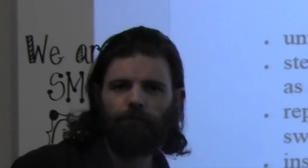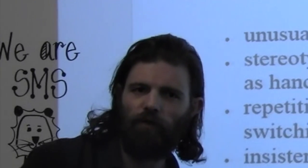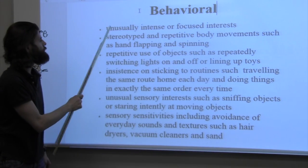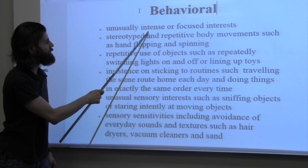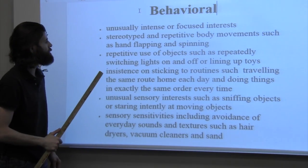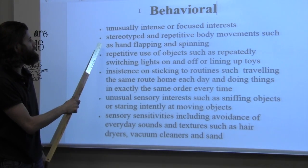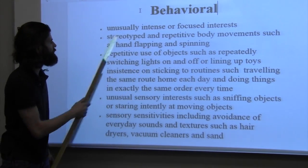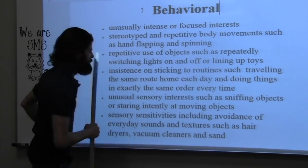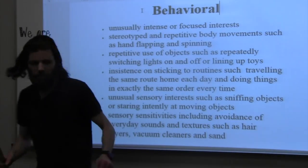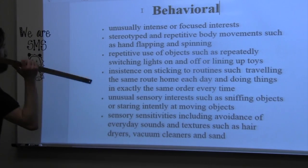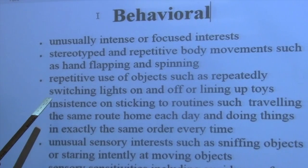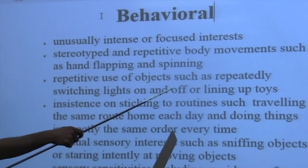Now we're going to get deep down into these characteristics. First one: behavior. Unusually intense or focused interest is part of behavior. We also might see some stereotyped and repetitive body movements such as hand flapping and spinning like this. And then you might see some repetitive use of objects such as repeatedly switching lights on and off or lining up toys.